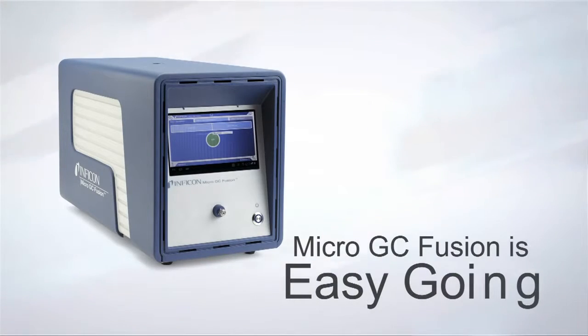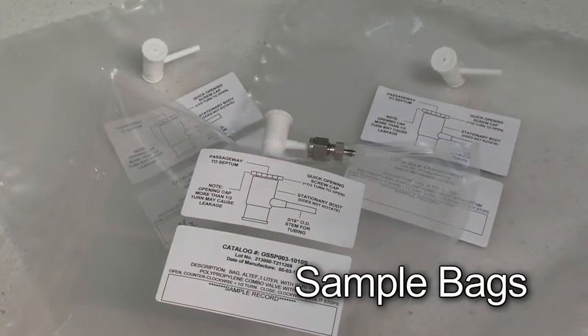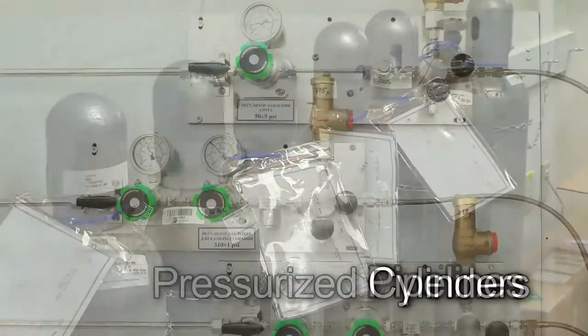Micro GC Fusion is easy-going. Samples can be injected using a variety of introduction mechanisms, such as gas syringes, sample bags, pressurized cylinders, and pipelines.